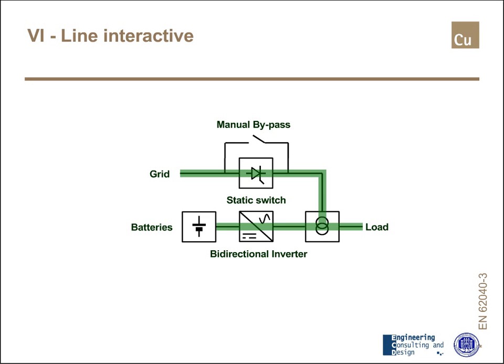The scheme of the VI UPS is shown in the slide. The load is fed directly from the grid through the static switch, and at the same time recharges batteries. But thanks to the bidirectional inverter, the voltage output can be adjusted by the UPS even in the presence of the grid.